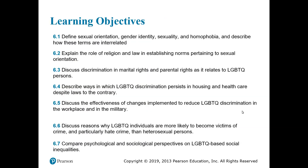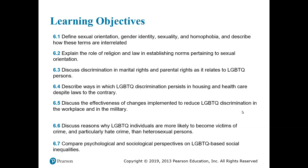By the end of reading Chapter 6, you should be able to define sexual orientation, gender identity, sexuality, and homophobia, and describe how these terms are interrelated. You'll be able to explain the role of religion and law in establishing norms pertaining to sexual orientation. You'll be able to discuss discrimination in marital rights and parental rights as it relates to LGBTQ persons. You'll be able to describe the ways in which LGBTQ discrimination persists in housing and healthcare despite laws to the contrary. You'll be able to discuss the effectiveness of changes implemented to reduce LGBTQ discrimination in the workplace and the military.